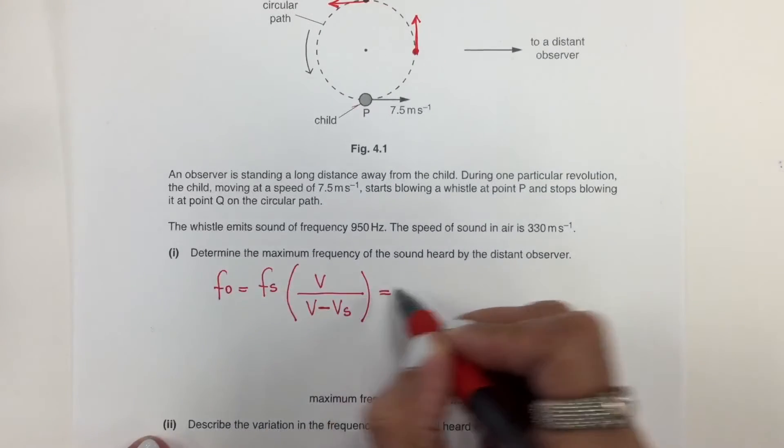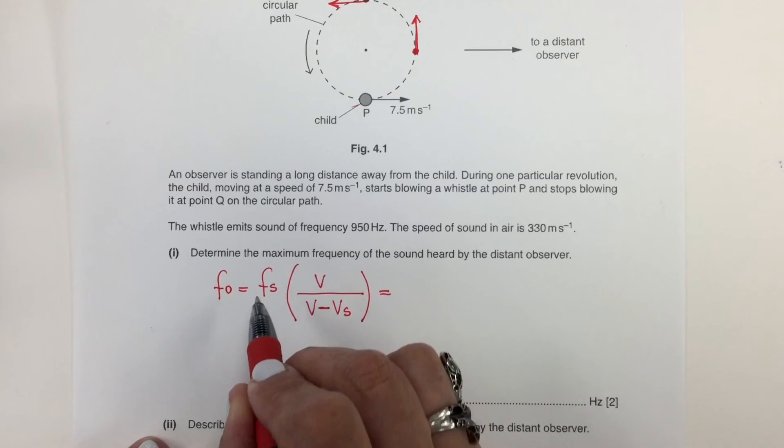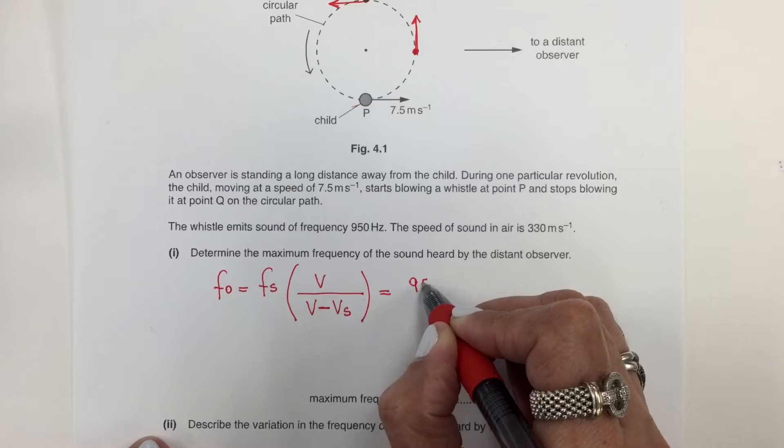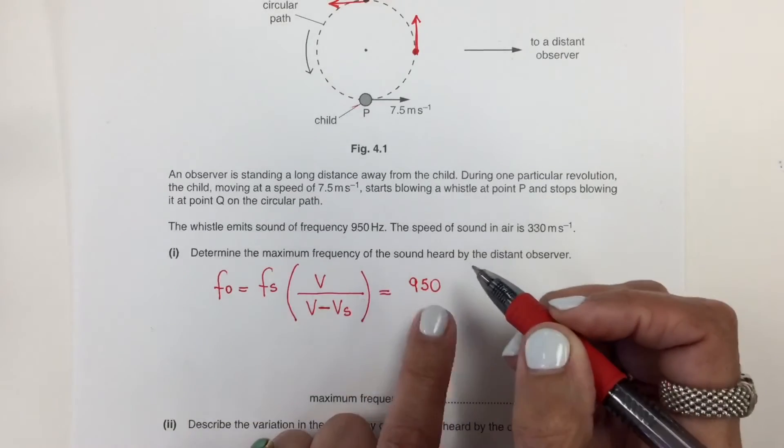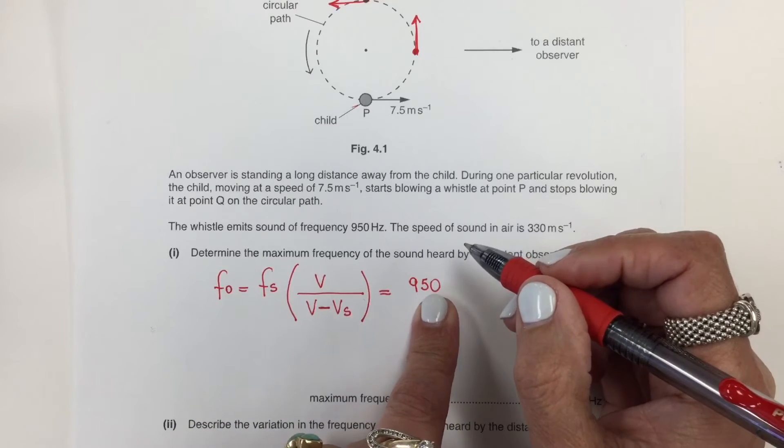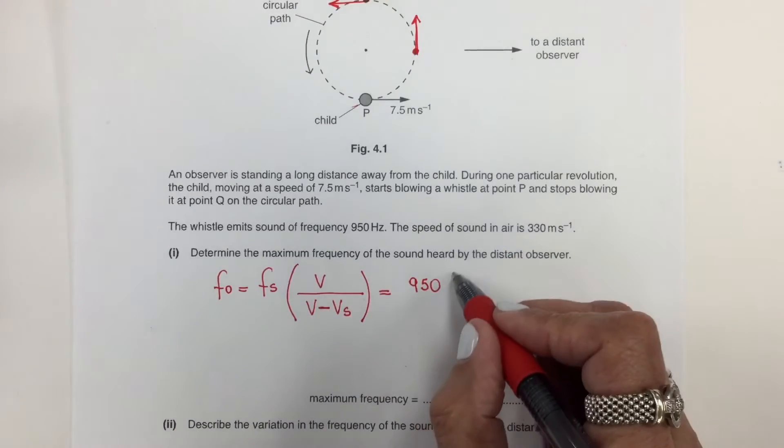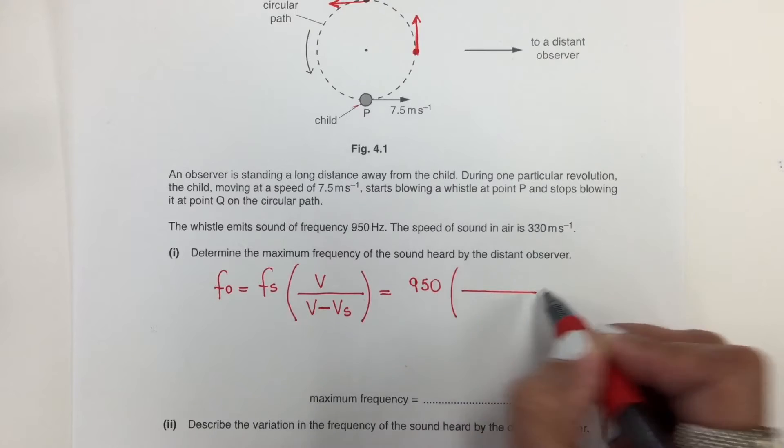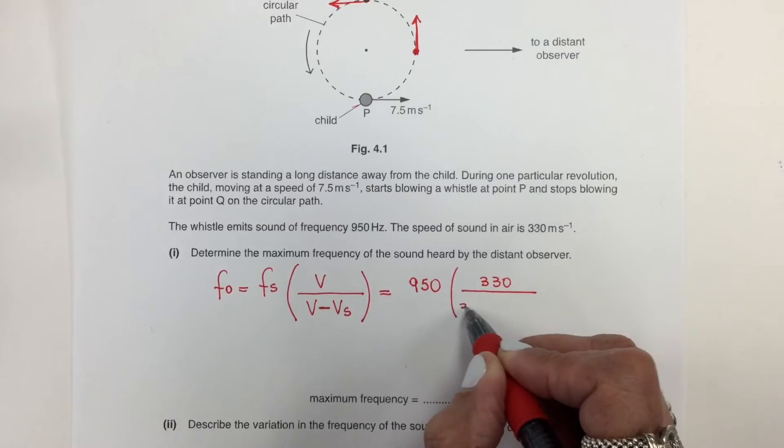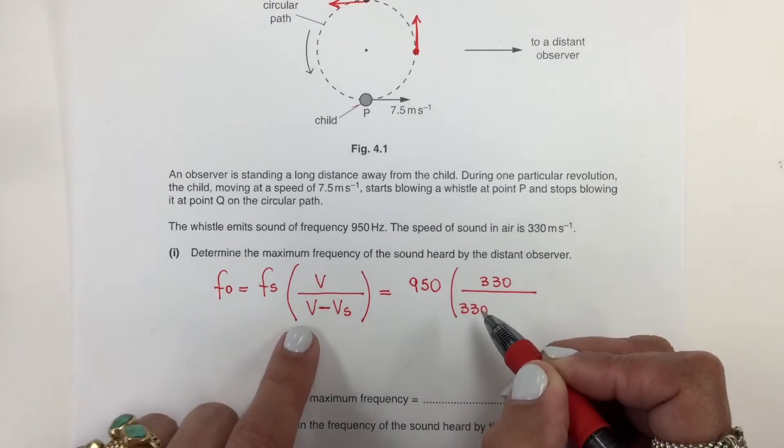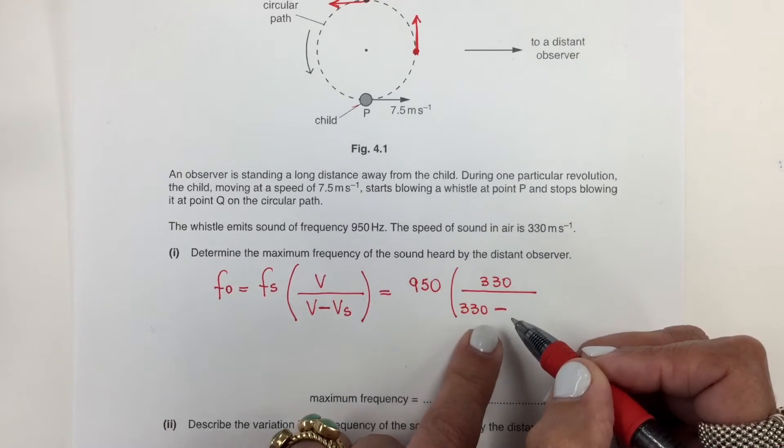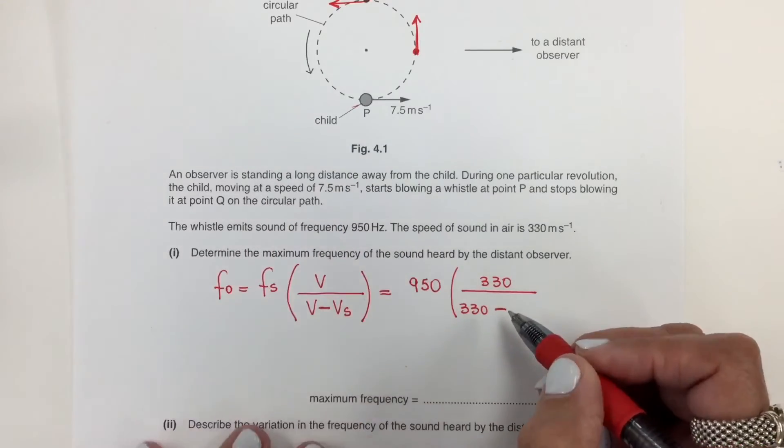Our substitution: the frequency of the sound source is 950. And we are expecting here, as a prediction, this frequency will be higher than 950. And the speed of the sound in the air was provided 330. 330, again, is the speed of sound in the air minus the speed of the sound source, which is 7.5.